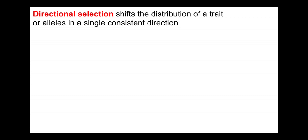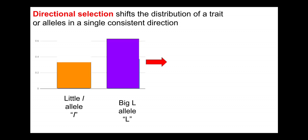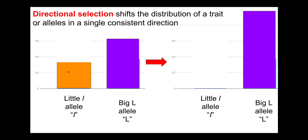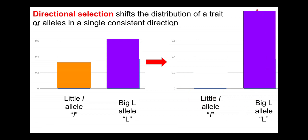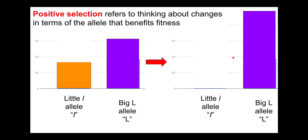Directional selection is going to shift the distribution of a trait or alleles in a single consistent direction. If we start with the big L allele at 0.6 and the little l allele at 0.375, we're going to shift the distribution until the little l allele is gone and the big L allele is completely dominant. We can also look at the distribution of genotypes and see how that shifts over time.